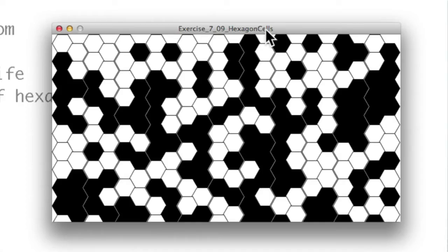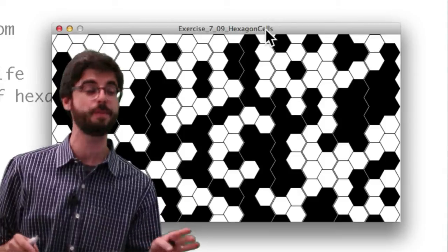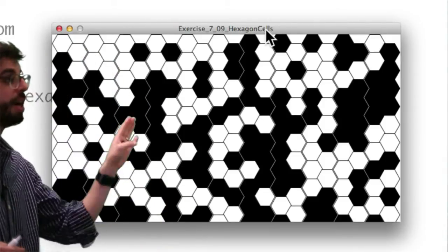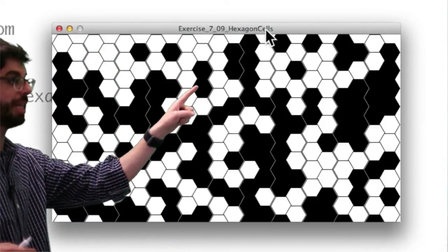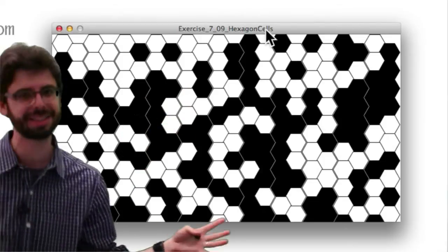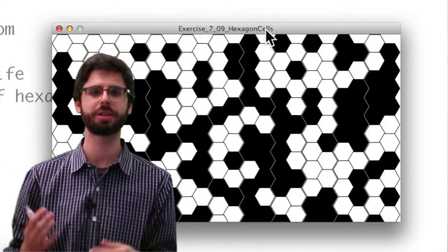An example of that that I do actually have over here, which you can find as exercise 7.9, is what if you have the cells hexagonal? And you can see each cell, it's a hexagon, has six neighbors. What type of rule sets and what type of things could you do there?